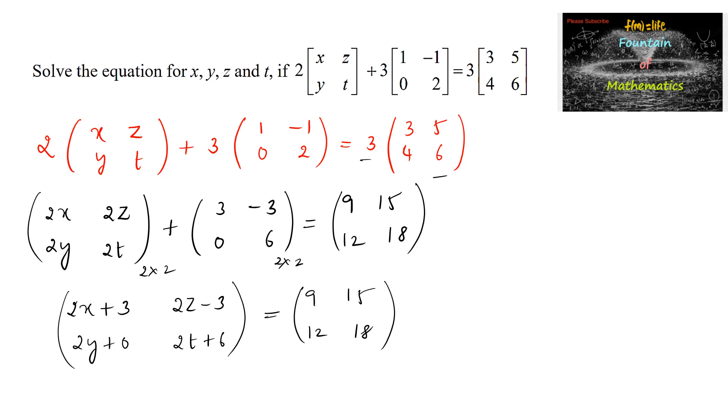Here two matrices are equal with the same order, so their corresponding elements must be same. On comparing, 2x plus 3 is equal to 9,